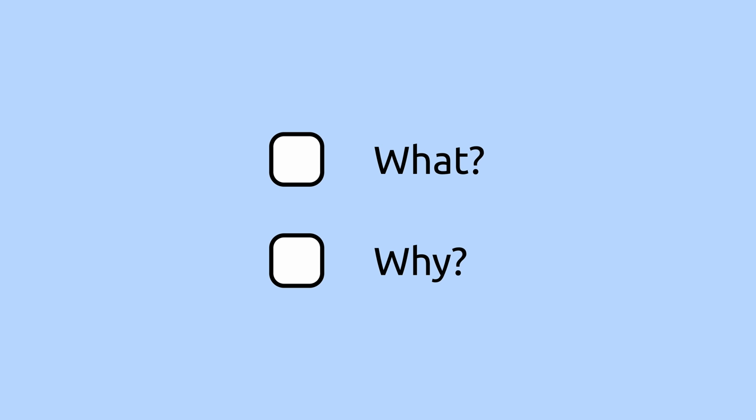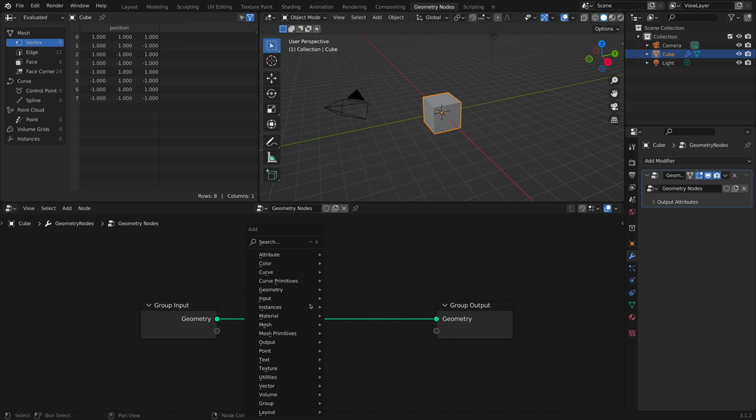How did geometry nodes actually work within Blender? Most tutorials show you what to do but not why you would do that or how. With something like geometry nodes it's kind of overwhelming. How do you know which node to use when? What's the thought process as you're going about building something in geometry nodes?